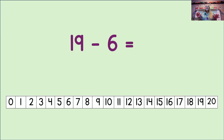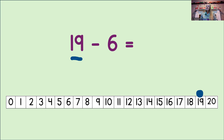Okay, let's count back to subtract. Do you remember what to do first? That's it. We look at the first number in the equation, and that's the number 19. Then, we mark that number on the number line, just like that. Okay, do you remember what to do next? That's it. We look at the second number in the equation. That's the number 6, and we count back 6 from 19.